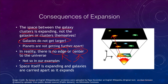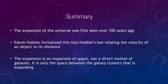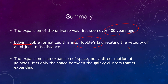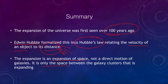Space itself is expanding, carrying galaxies and galaxy clusters apart as it expands. To summarize: the expansion of the universe has been observed for the last hundred years. Edwin Hubble gave us Hubble's law, relating the velocity of an object to its distance and providing a method to determine distances out to the edge of the universe. The expansion is an expansion of space, not a direct motion of galaxies — only the space between galaxy clusters is actually expanding. That concludes this lecture on the expanding universe.